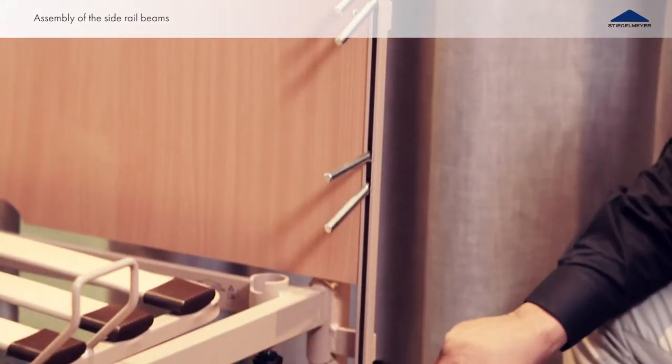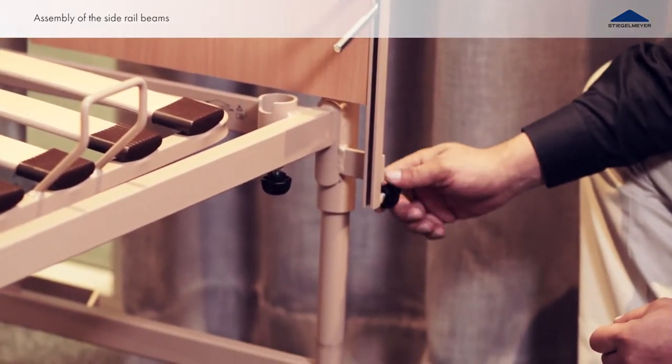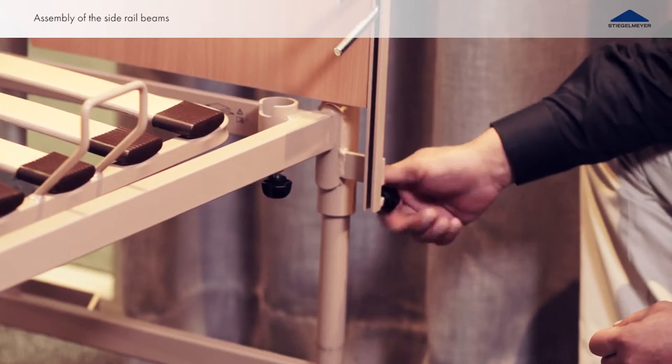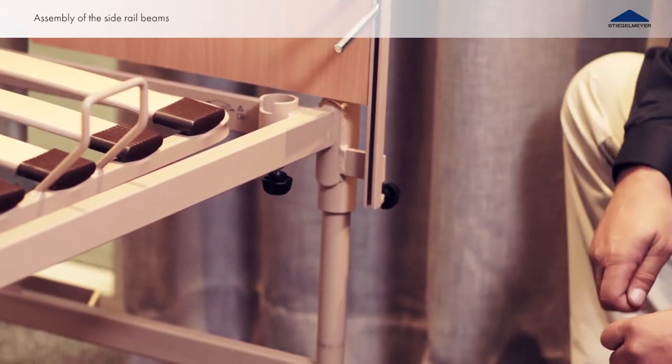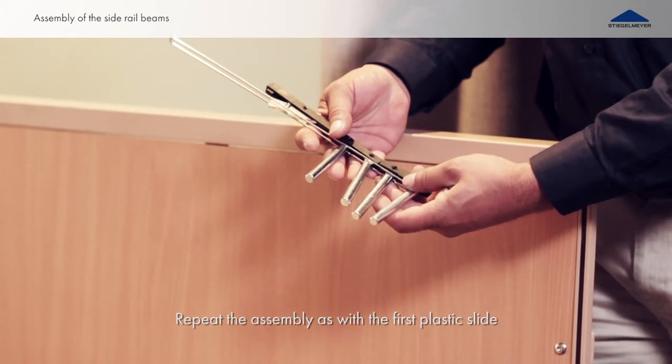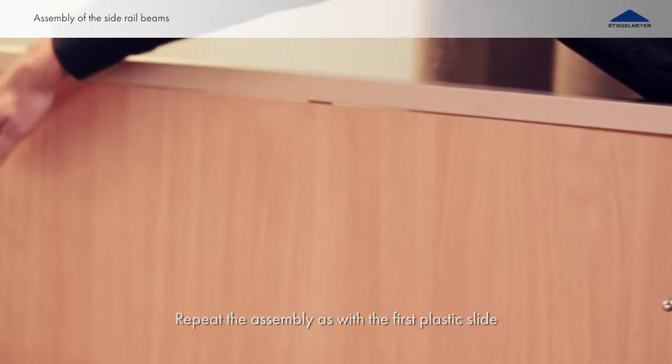In order to prevent the plastic slide from falling out of the guide track, reinsert and tighten the knurled screw. Insert another plastic slide into the opposite side of the same end board.